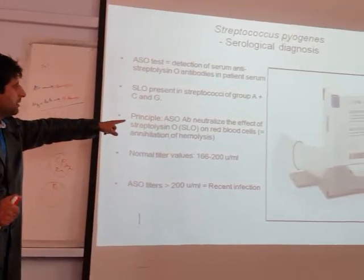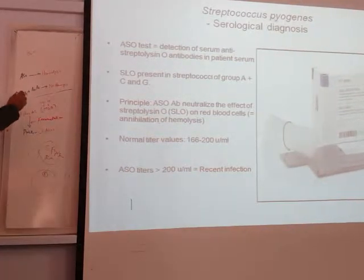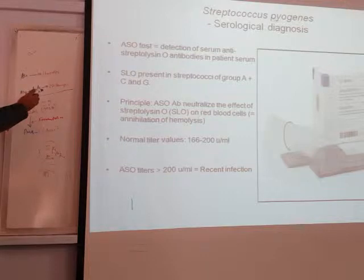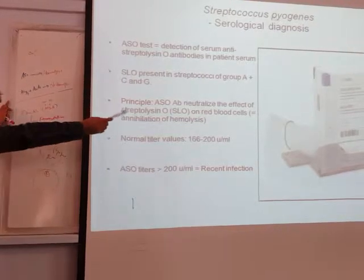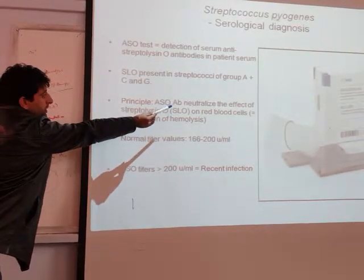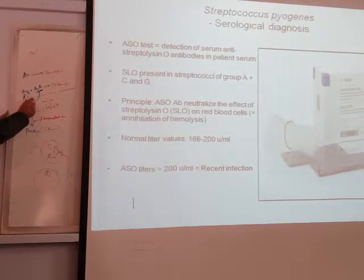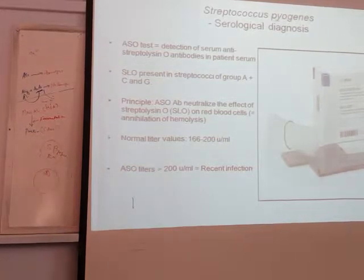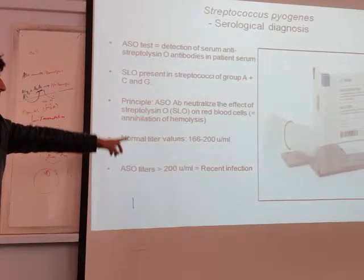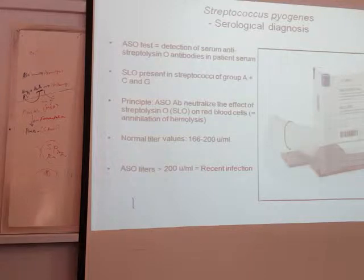The principle is: ASO antibody neutralizes the effect of Streptolysin O on red blood cells. The antibody neutralizes the effect of the antigen — the ASO antigen — and protects the RBCs from hemolysis. The normal value for this is 200 units. If it is greater than 200 units, this means there is a recent infection.